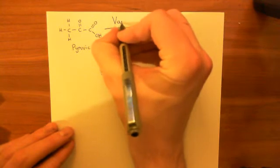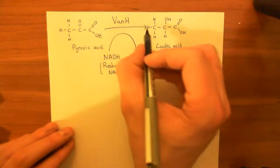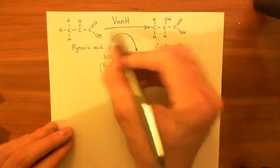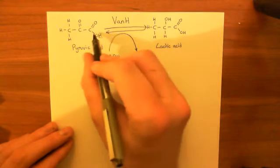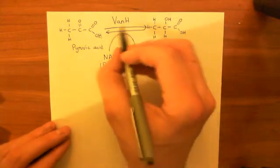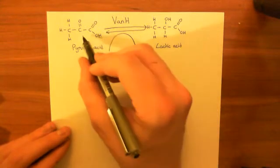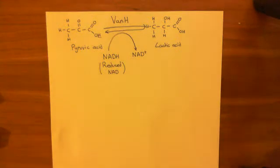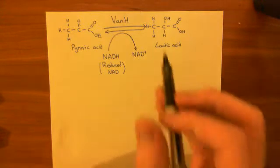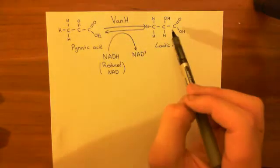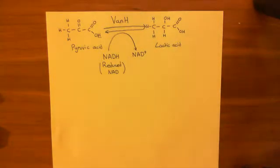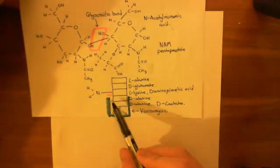VAN-H is a lactate dehydrogenase enzyme. It was originally named for catalyzing the reaction in the reverse direction — dehydrogenating lactate to pyruvic acid — but it actually catalyzes both directions. So it can just as easily make lactic acid from pyruvic acid, which is a metabolite easily available in the cell. The next thing to look at is how you synthesize this D-alanine–D-lactate dipeptide that's going to be on the end of your pentapeptide.